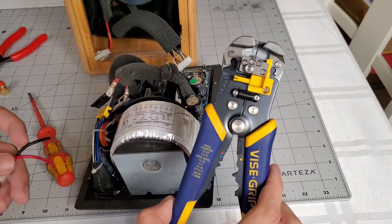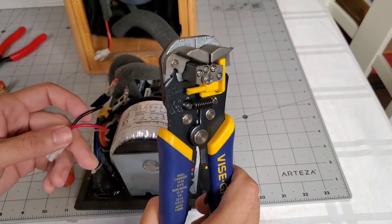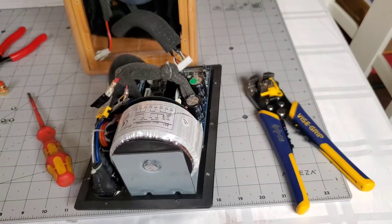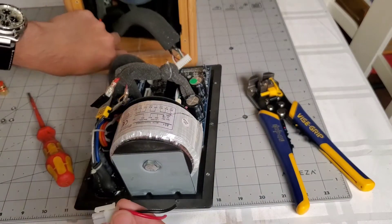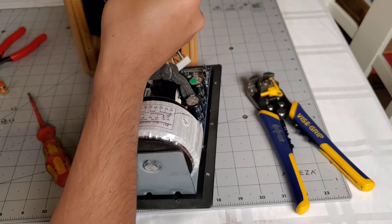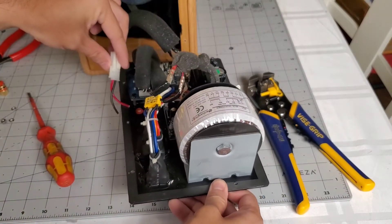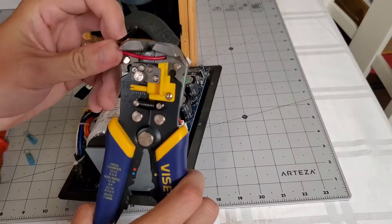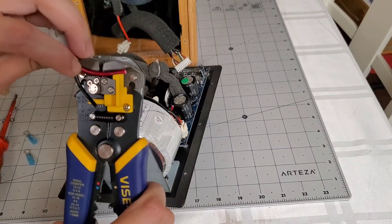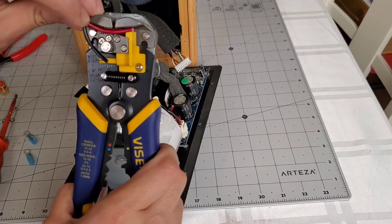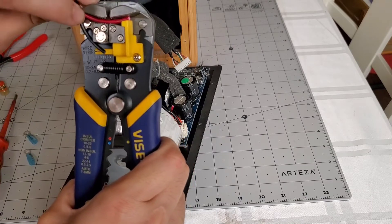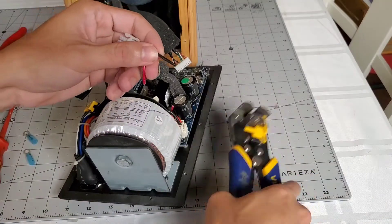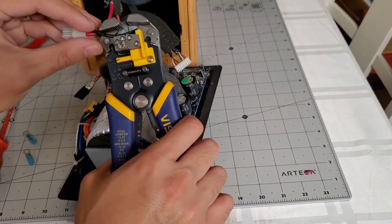If you don't have a good wire stripper, I highly recommend this Vise-Grip. It's basically an automatic wire stripper, and it's incredible. I'll put the link in the description below in case you'd like to get one. This thing works like magic.